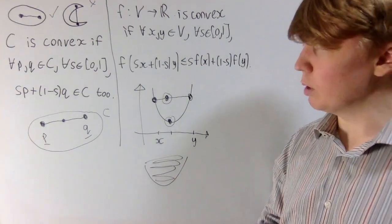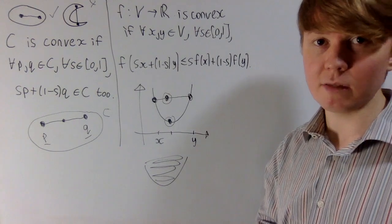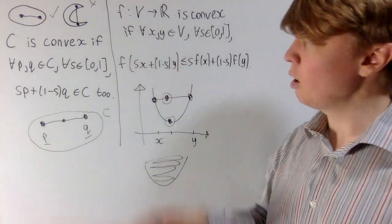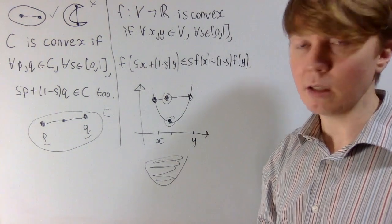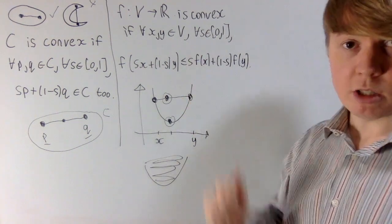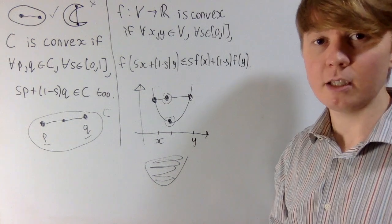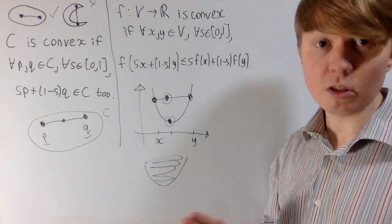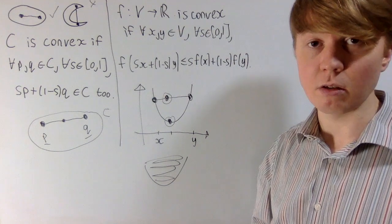What we'll do now is try to prove that the set of convex functions from a fixed vector space — or even from a convex subset of this vector space — is itself a convex set. We'll build up a bit of intuition first with some animations.